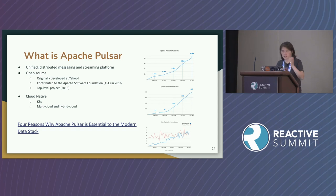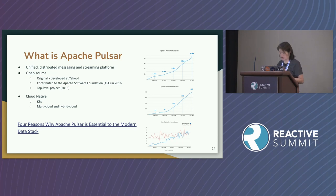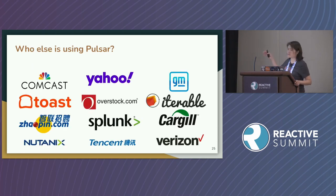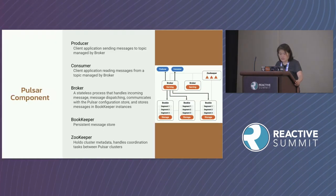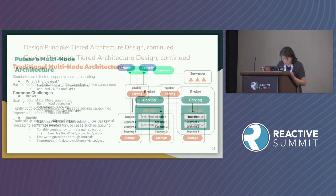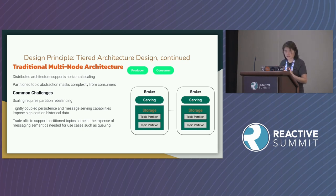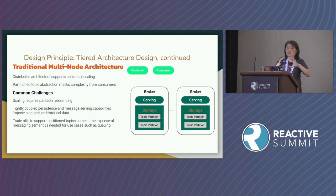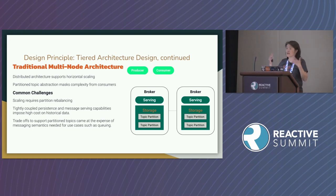Apache Pulsar is a distributed messaging and streaming platform, open source, very cloud-native in nature. The graphs show increasing popularity in GitHub — reflected in contributor count and GitHub stars. These are just a sample of companies using Pulsar — it's still growing in importance. One big differentiator: separation between compute and storage. Pulsar takes care of spreading out all your topics automatically when scaling, so you don't need to do the manual rebalancing that you would with Kafka.